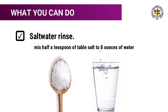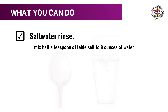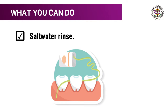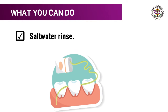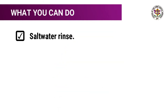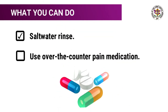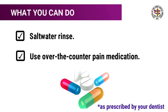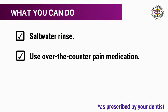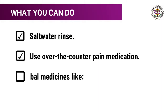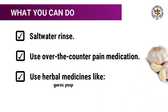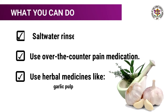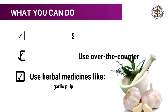You can also gently floss around the sore tooth to remove any bits of food that may be stuck. Use over-the-counter pain medication such as ibuprofen and paracetamol. Use herbal medicines like garlic pulp — try chewing a piece of garlic or placing chopped bits on your tooth.